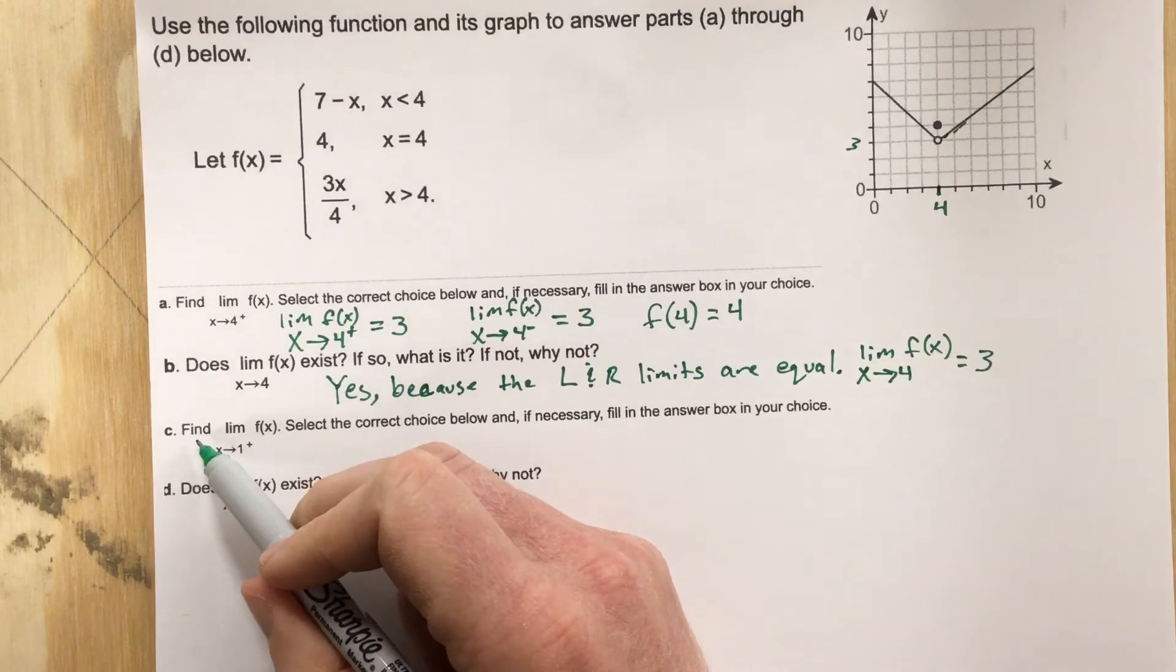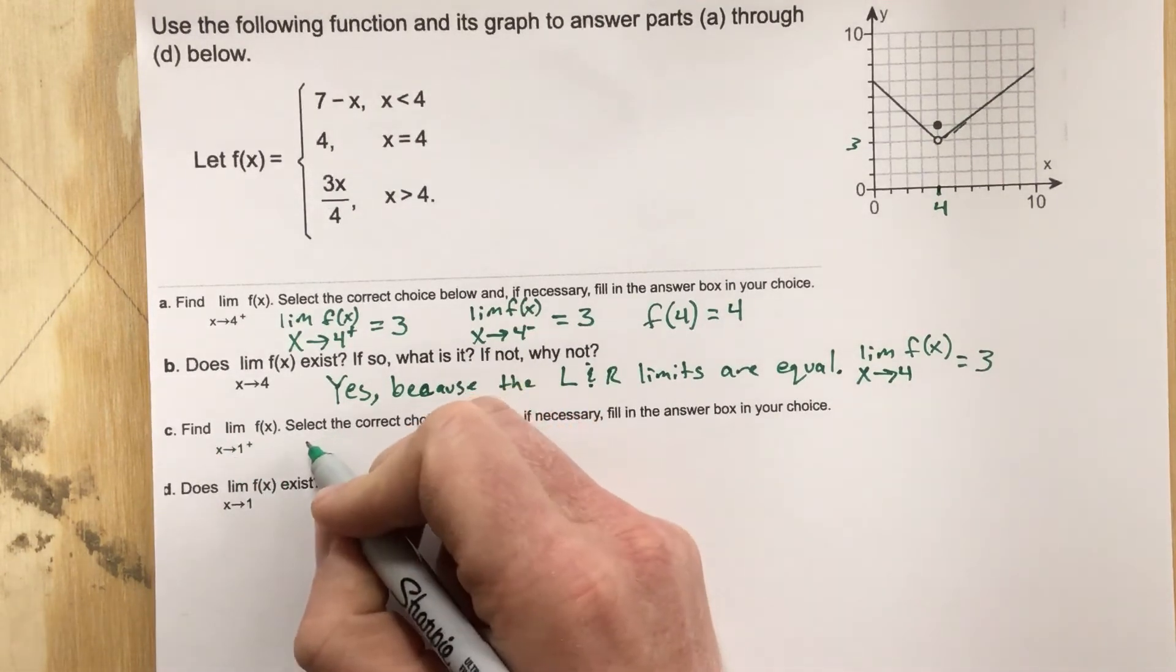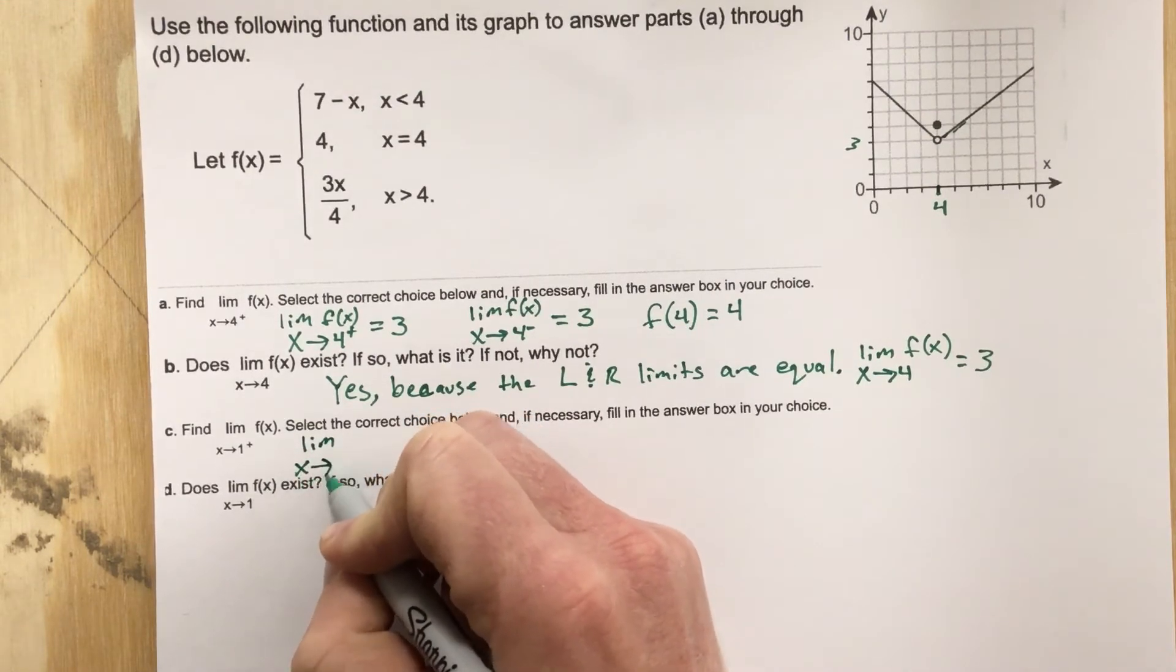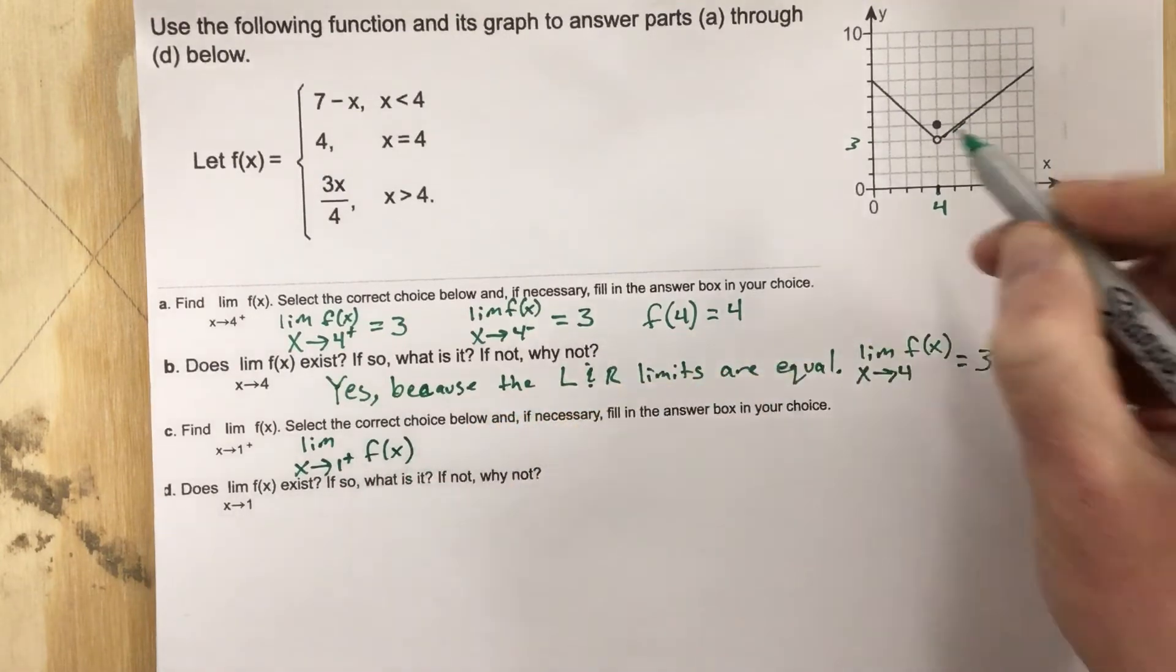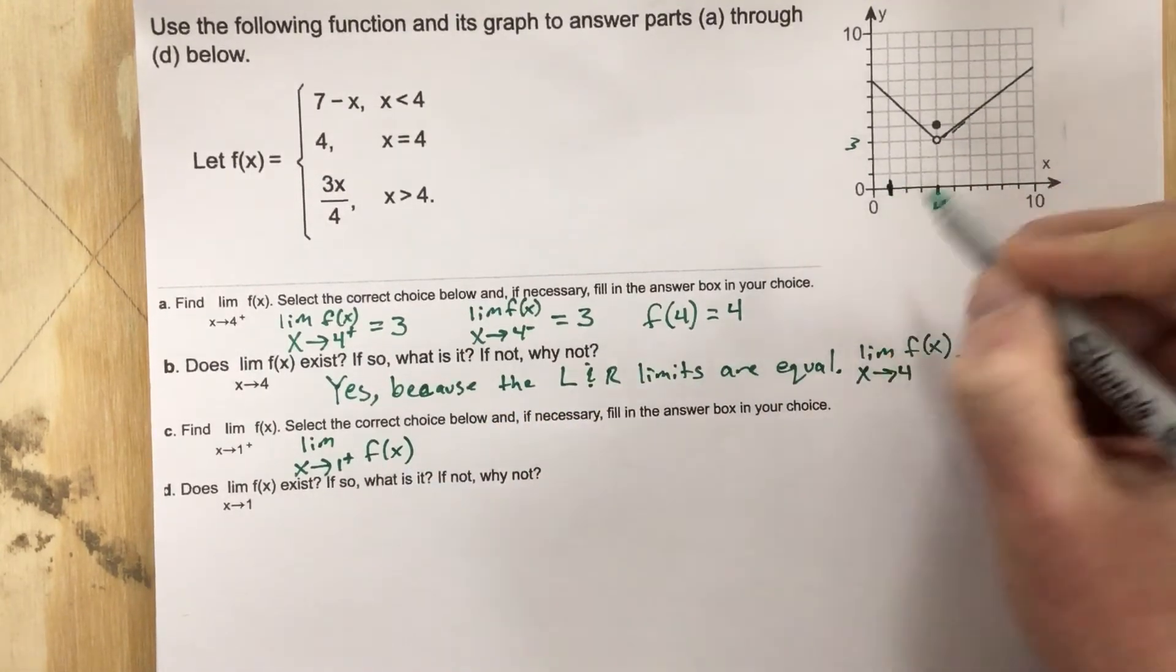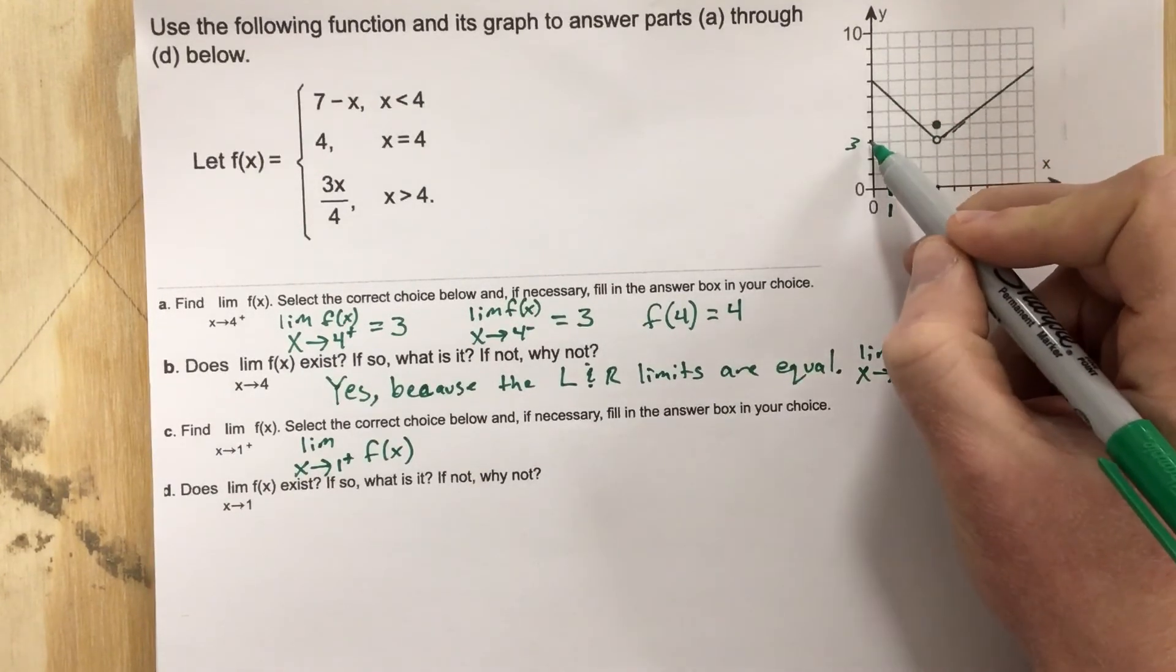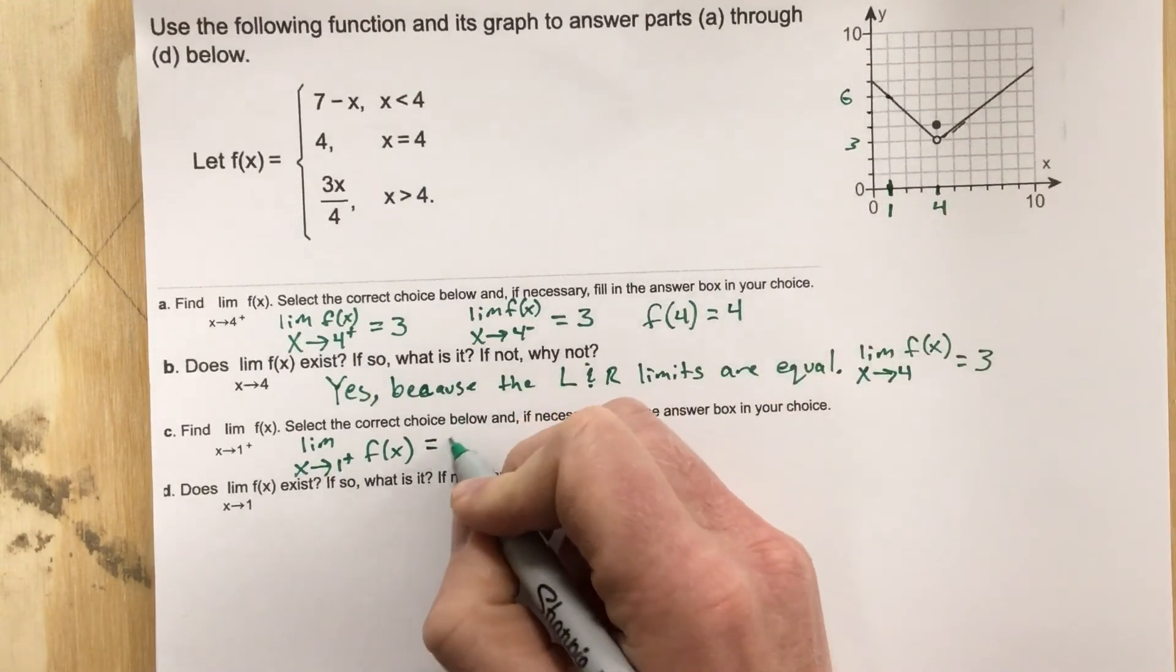Okay, for part c it says find the limit of f(x) as x approaches 1. So we're going to say limit as x approaches 1 from the right of f(x). We're going to look at 1, which is here. As we approach it from the right, we're getting a y value of 1, 2, 3, y value of 6. So we get equal 6.